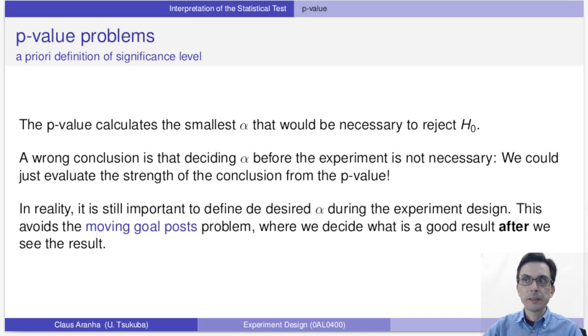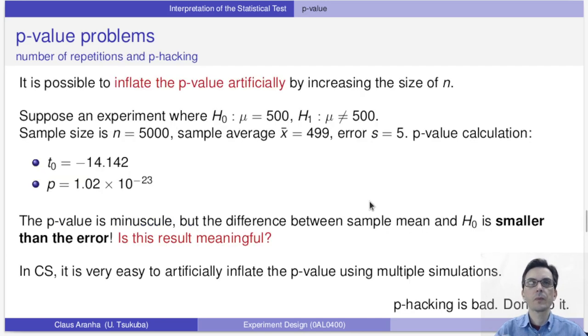The p-value can be very useful since it quantifies how surprising the experiment result was. However, we need to be careful. When you learn that the p-value measures the minimum alpha that rejects the null hypothesis, one thing we naturally think is we don't need to decide alpha, we can just use the p-value. That would be a wrong conclusion because changing the value of alpha after we get the experiment data would be similar to moving the goal posts of the problem. We need to determine what confidence level we desire for this experiment before we look at the data.